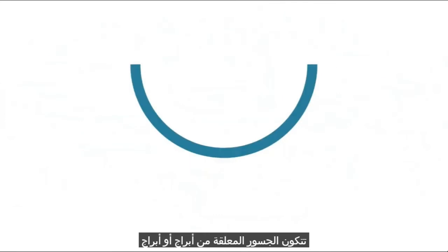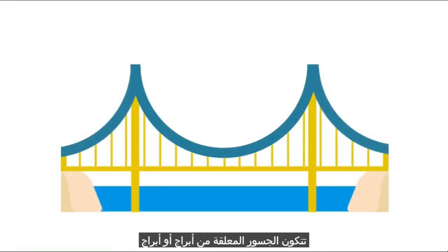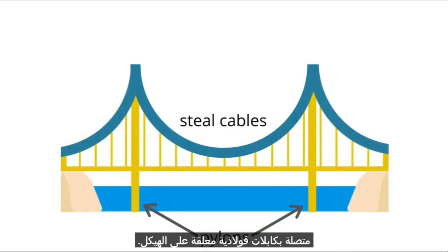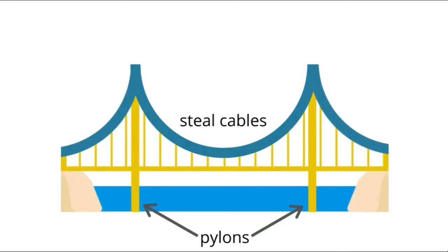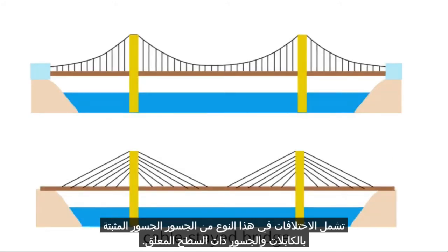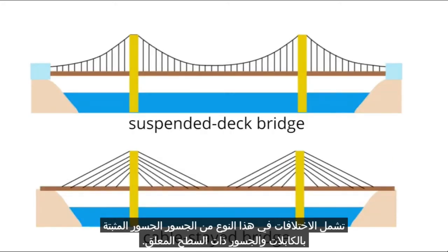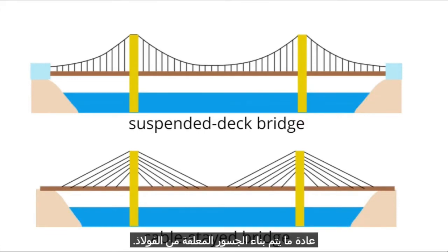Suspension bridges consist of towers or pylons connected with steel cables suspending the structure. Variations of this type include cable-stayed bridges and suspended deck bridges. Suspension bridges are usually built from steel.